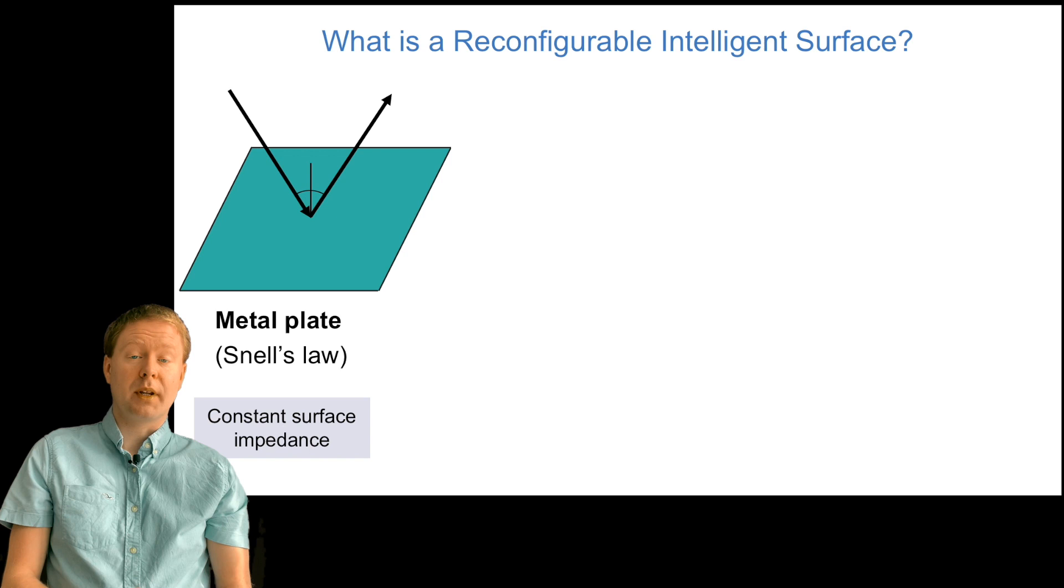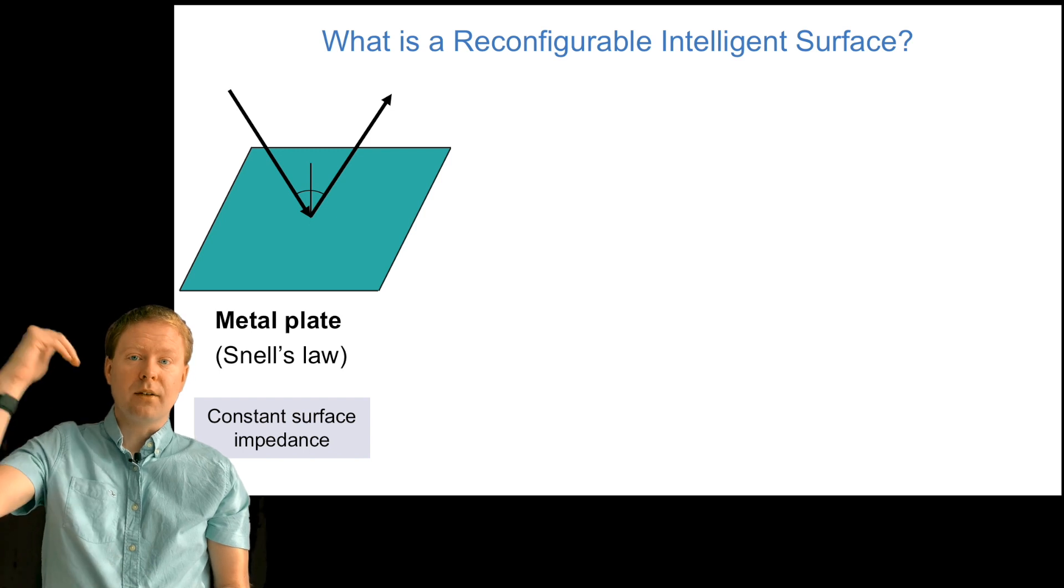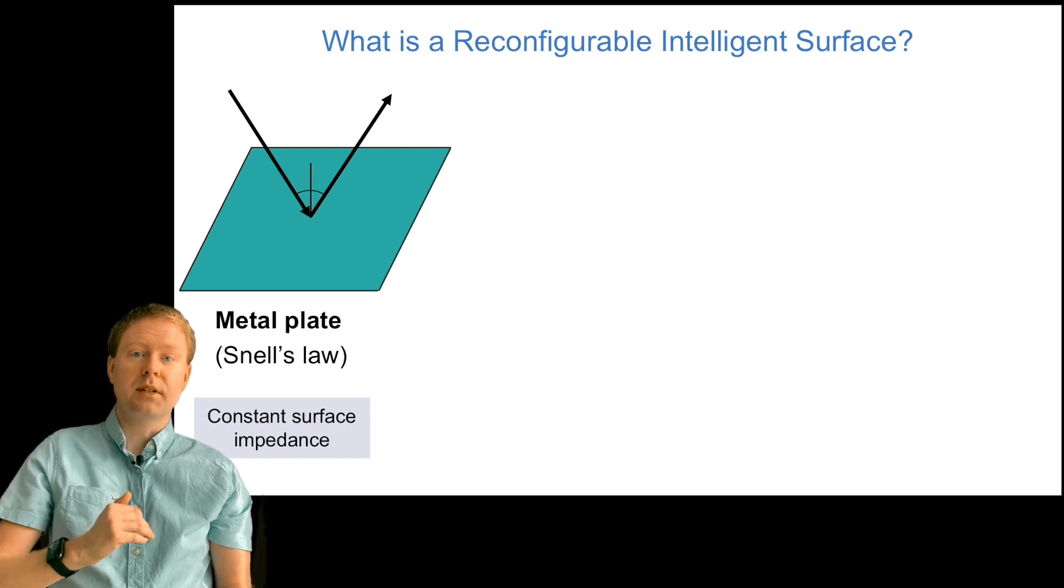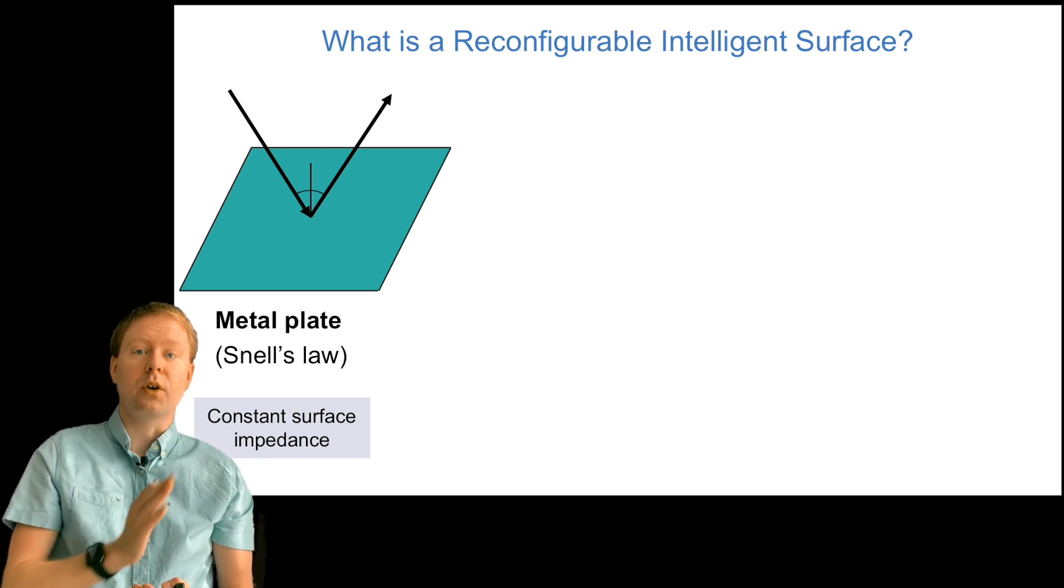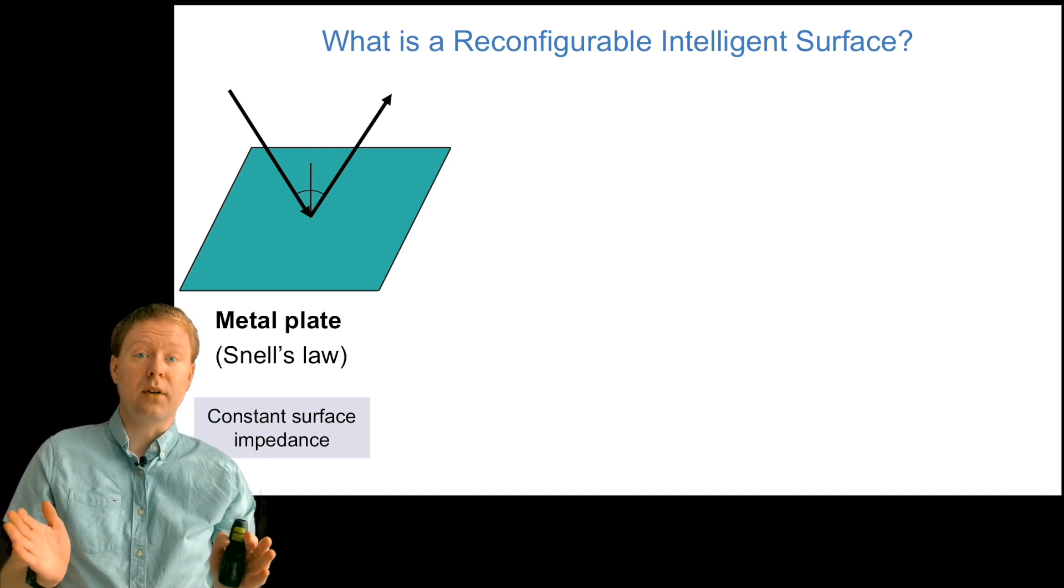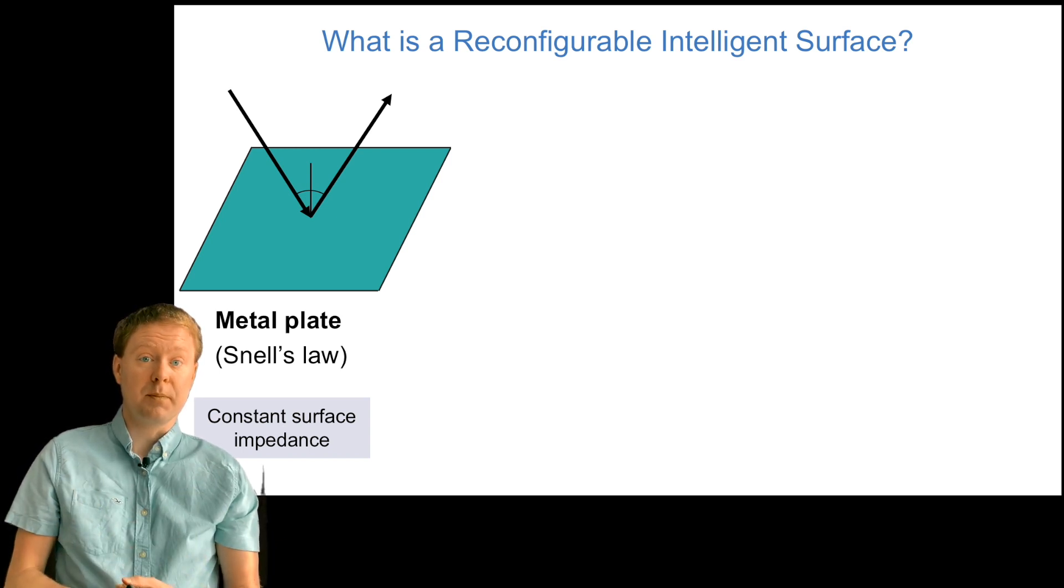So what is a reconfigurable intelligent surface? Let's start with a standard surface, a metal plate. When a signal is coming into its surface, it will bounce off in a particular direction determined by Snell's law. As you can see here, it's the same angle that goes in that it then will go out again. That is because this is a coherent surface, everything works the same everywhere, it has a constant surface impedance.